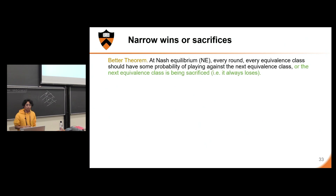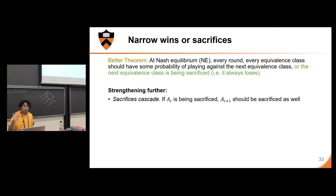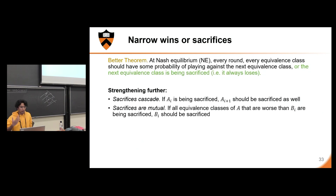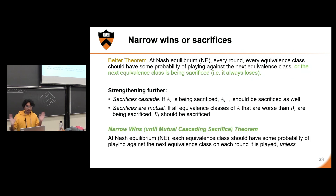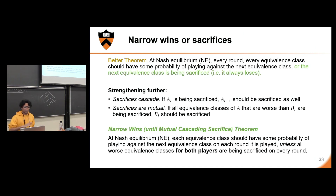Let's create a better theorem: every equivalence class should have some probability of playing against the next, unless the next equivalence class is being sacrificed. We can strengthen this further — sacrifice cascades: if Ai is being sacrificed, Ai+1 should also be sacrificed because it is a worse resource. Similarly, sacrifices are mutual: if all equivalence classes of A that are worse than Bi are being sacrificed, then Bi might as well be sacrificed too. This gives us the Narrow Wins Theorem: every equivalence class is being played against the next unless all worse equivalence classes are being sacrificed.